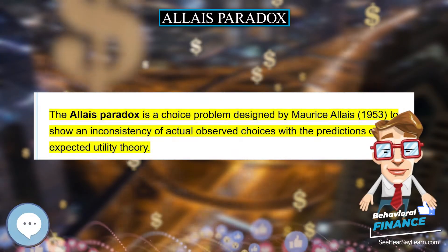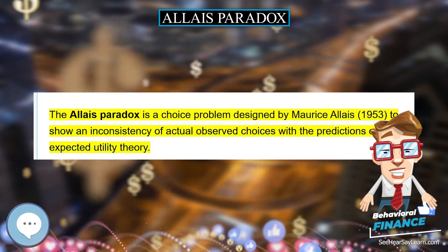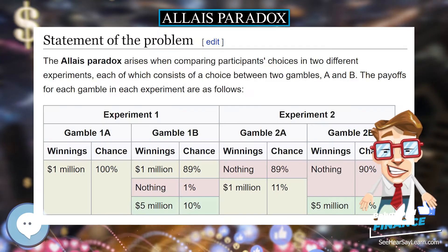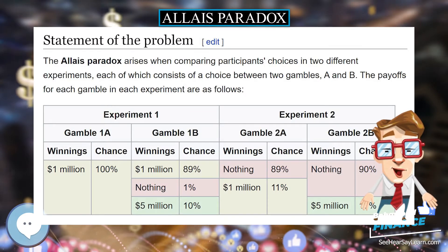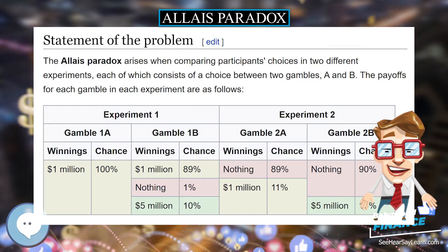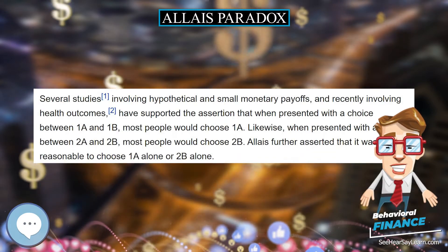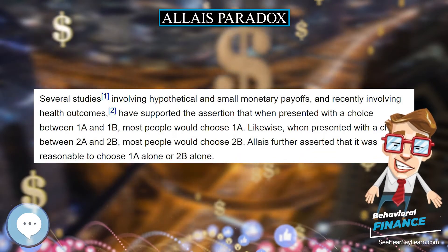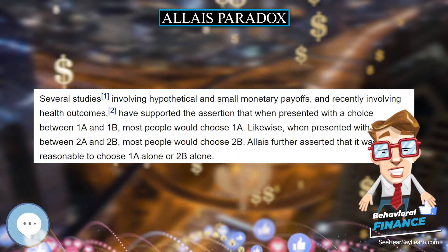The Allais Paradox is a choice problem designed by Maurice Allais to show an inconsistency of actual observed choices with the predictions of expected utility theory.